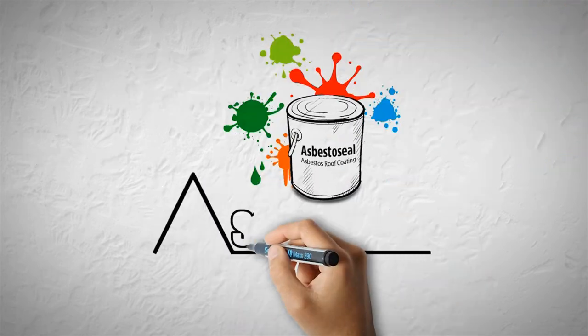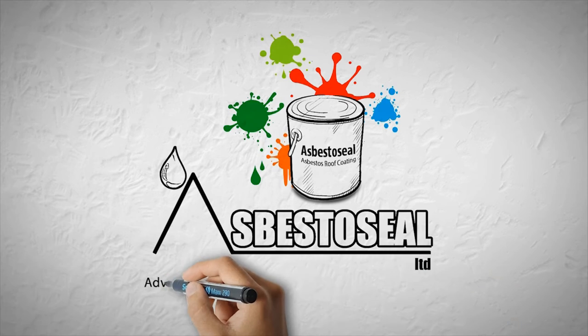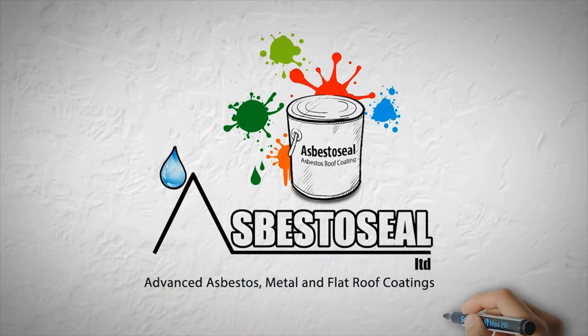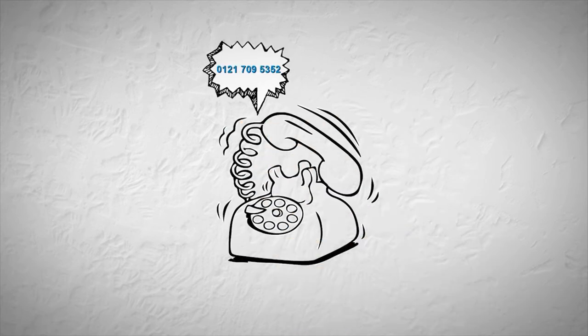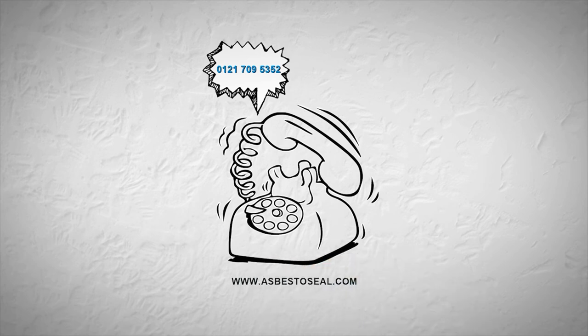So, when it comes to asbestos roof coatings, it has to be Asbestoseal. Because anything else is just paint. Call Asbestoseal on 0121 709 5352 or visit our website at www.asbestoseal.com for more information.